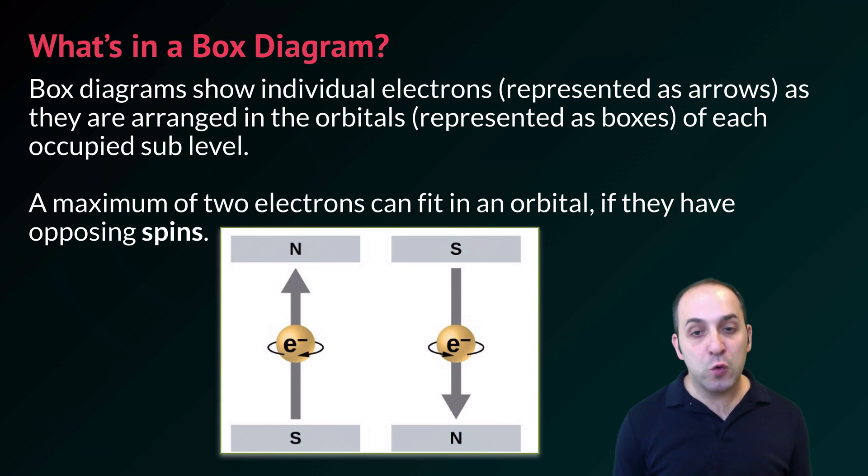A maximum of two electrons can fit in an orbital as long as they have opposing spins. So you can think about an electron as spinning the same way that the earth spins on its axis. And of course there are two possible directions for spin, clockwise and counterclockwise.